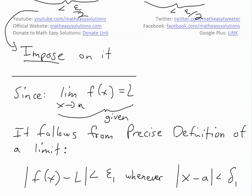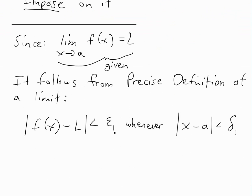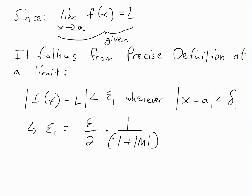Now we explain why we want the f(x) minus L and g(x) minus M terms. We're given that the limit as x approaches a of f(x) equals L, so by the precise definition, there must exist delta_1 such that the absolute value of f(x) minus L is less than epsilon_1 whenever x minus a is less than delta_1. For convenience, we set epsilon_1 equal to epsilon divided by 2, times 1 divided by (1 plus the absolute value of M). You'll see why this cancels things out nicely.